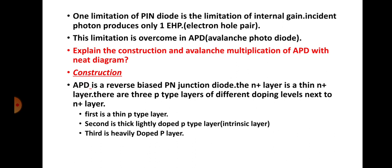In this session we will discuss about avalanche photodiode. In the previous sessions we discussed about PIN photodiode and the main limitation of the PIN photodiode is that there is no internal gain, because if one photon is incident on the PIN diode then it will produce only one electron-hole pair. In order to provide internal gain we have to use other external devices.